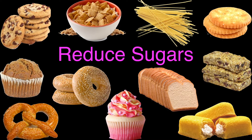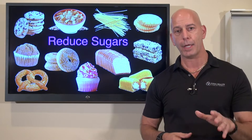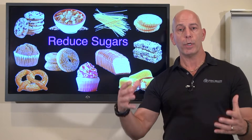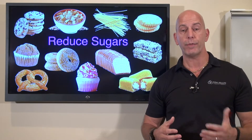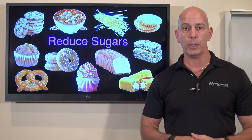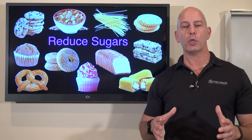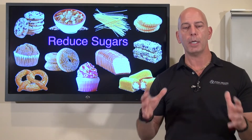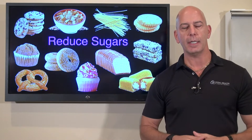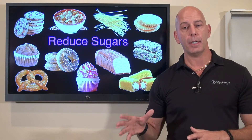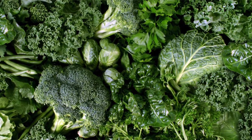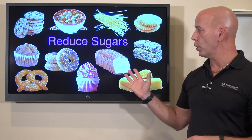Sugars are highly inflammatory to the body, especially your processed, refined carbohydrates. Even though we've reduced a lot of fat in our diets, we've increased the sugars. I know your doctors are telling you to eat healthy whole grains, make sure you're getting whole wheat and all the fiber you need. But you don't need to get that necessarily from your carbs — you can get that from vegetables. So you want to reduce the sugars.